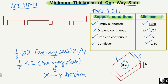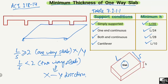To summarize the simply supported slab: this type of slab is supported only by two conditions, making it a simply supported slab. If this is the length of the slab, the minimum thickness h will be equal to L/20, where L is the length of the slab.